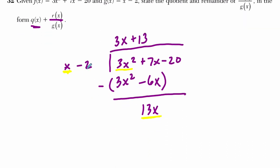So we do 13 times x minus 2, and we get 13 times x, 13x, minus 2 times 13, minus 26.